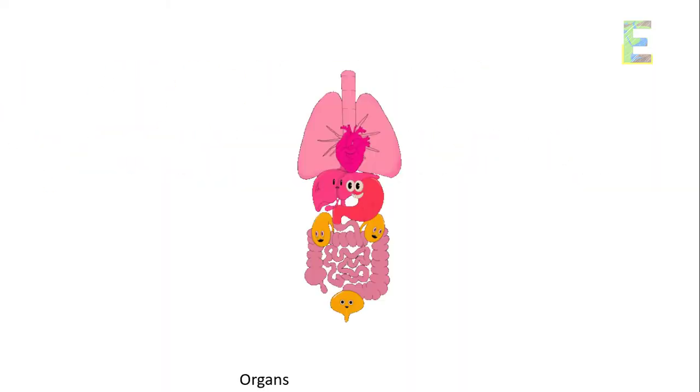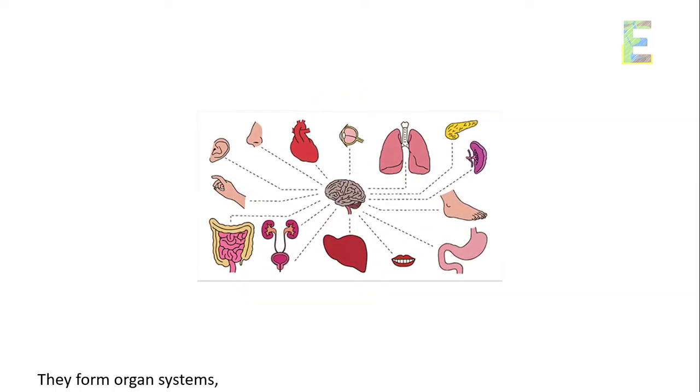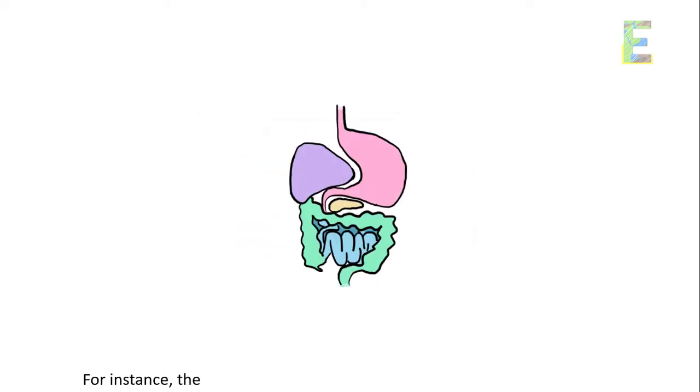The organ system level. Organs do not work in isolation. They form organ systems, where multiple organs collaborate to perform complex tasks. For instance, the digestive system breaks down food and absorbs nutrients.